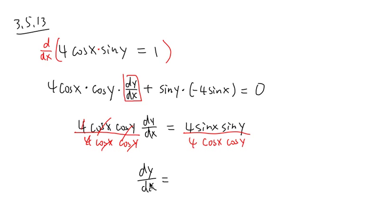dy/dx is equal to... I see that the 4 cancels out, there's no big deal. But, sine x over cosine x is tangent x. And right here, sine y over cosine y is another tangent y. Very nice.